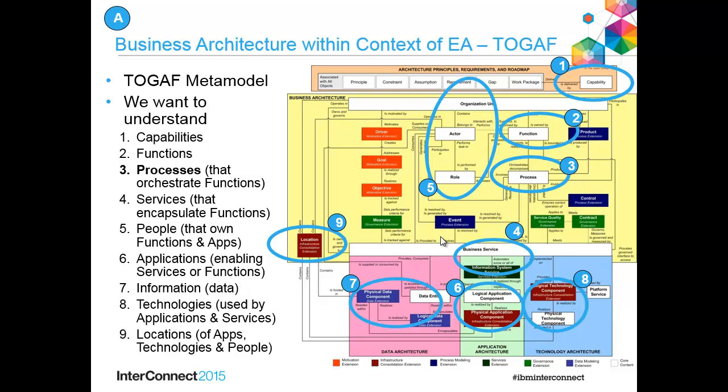Business services could be manual or automatic. Applications enable services or functions. We talked about the difference between logical and physical application components. Data is out there whether you talk about physical data like databases with tables and columns, or you encapsulate it into data components, which is what TOGAF does — a higher-level capture of data, including logical data models. Technologies — logical and physical — such as Java, JavaScript, SQL Server, and then locations of applications, technologies, and people.